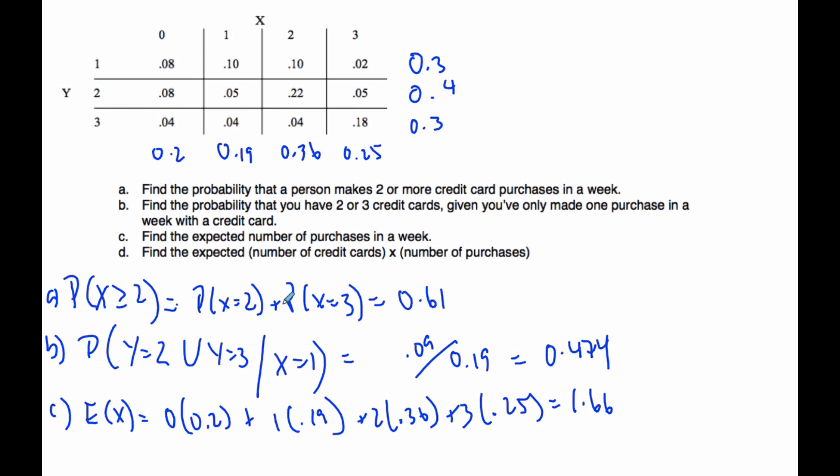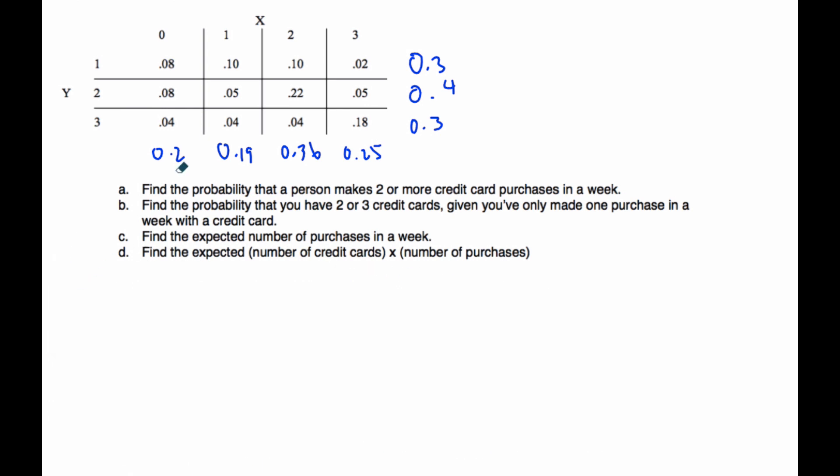Finally, I'm asked to do the expected number of credit cards times number of purchases. If I'm going to do that, that is going to be a lot of different criteria here. The expected value of X times Y means I'm going to look for every single possibility. I'm going to have to look at this cell.